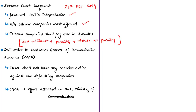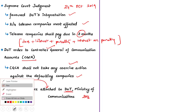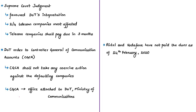The Supreme Court ordered telecom companies to pay their dues within three months, but only Reliance Jio paid within the time limit on 23rd January 2020. On the same day, the Department of Telecommunications passed an order to the Controller General of Communication Accounts directing them not to take coercive actions against the defaulting companies. The Controller General of Communication Accounts is an office attached to the Department of Telecommunications, created in 2016. As of 14th February, both Airtel and Vodafone had not paid their AGR dues.